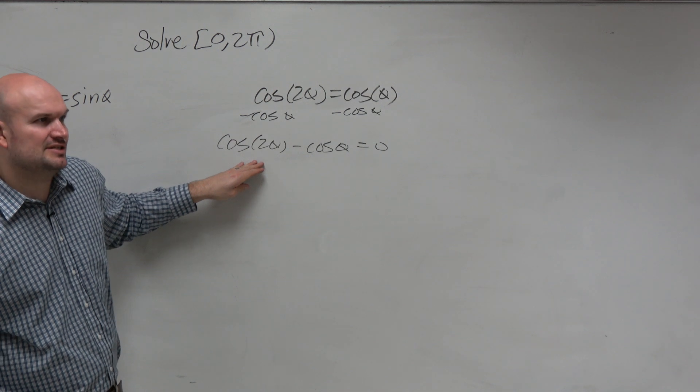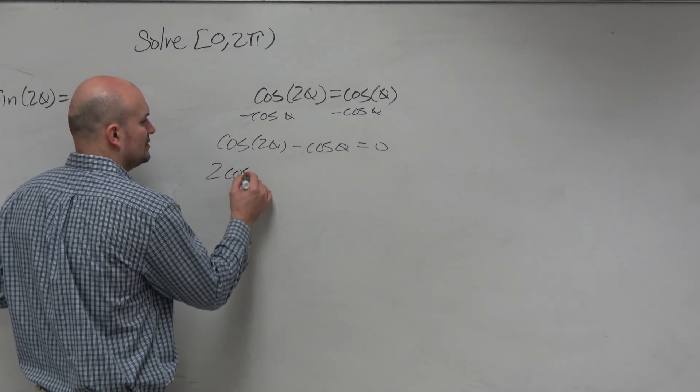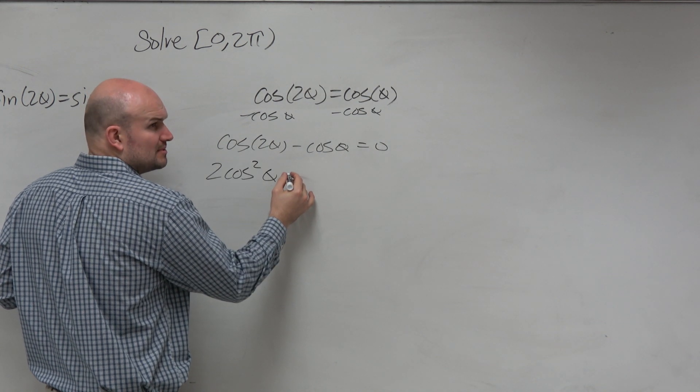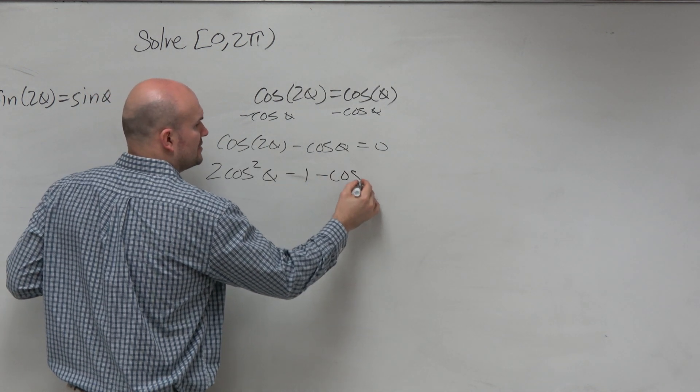I don't want to add a sine into this equation. So I'm going to rewrite this as 2 cosine squared of theta. What is it? Minus 1. Minus 1 minus cosine of theta.